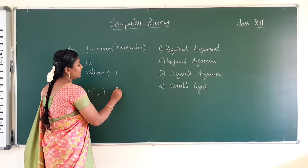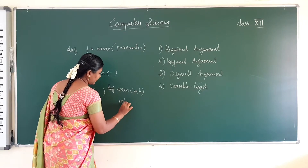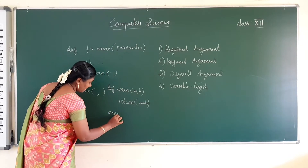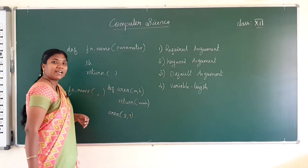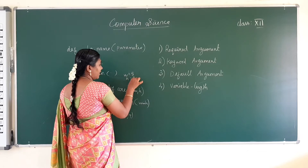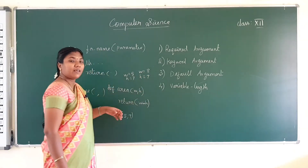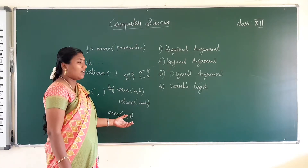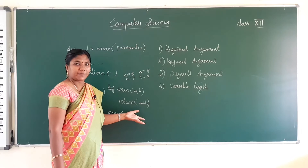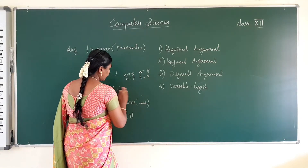Suppose I have a function 'area' with definition: def area(width, height) and I return w * h. Then I call the function: area(5, 7). Here width gets 5 and height gets 7. Suppose width is equal to 8 and height is equal to 7, changing the numeric values will not affect because we are giving numeric values in order. Let us see another example.